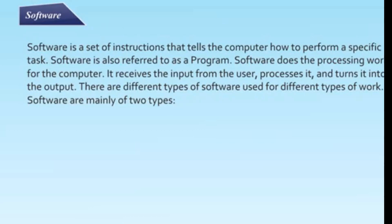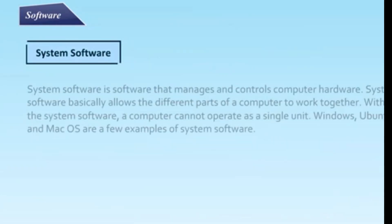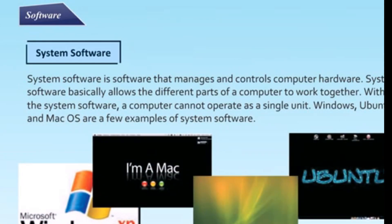Software are mainly of two types. System software is a software that manages and controls computer hardware. System software basically allows the different parts of a computer to work together. Without the system software, a computer cannot operate as a single unit. Windows, Ubuntu, and Mac OS are few examples of system software.